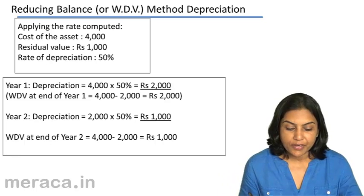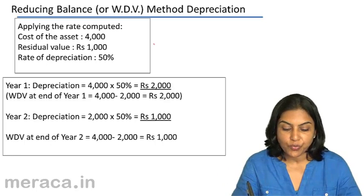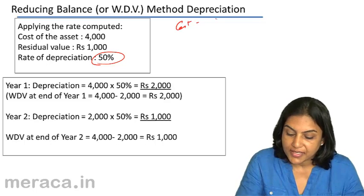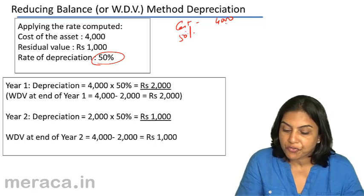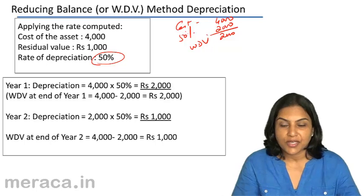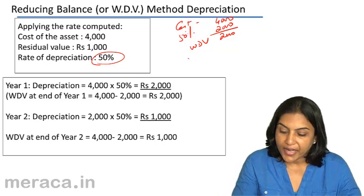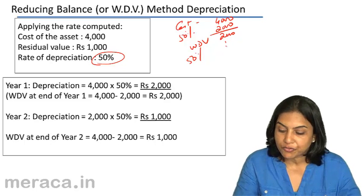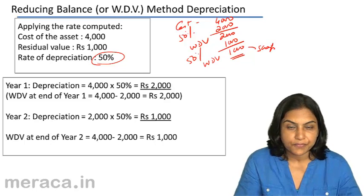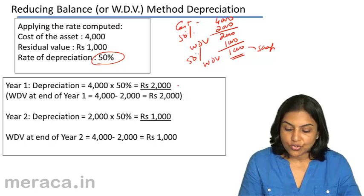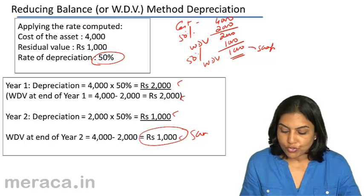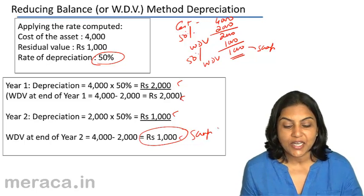Applying the computed rate: cost of the asset is 4,000, residual value is 1,000, and the rate is 50%. In year 1, the cost is 4,000 and depreciation at 50% is 2,000, giving a written down value of 2,000 at the end of year 1. In year 2, we charge 50% on 2,000, which is 1,000, giving a written down value of 1,000 — which is exactly the scrap value. So year 1 depreciation is 2,000 with a written down value of 2,000; year 2 depreciation is 1,000 with a written down value of 1,000, confirming the scrap value at the end of the asset's 2-year life.